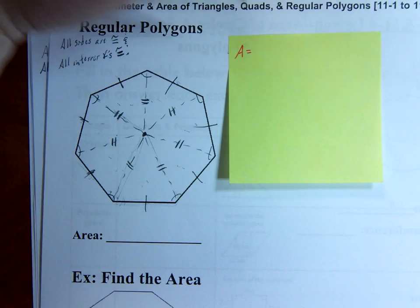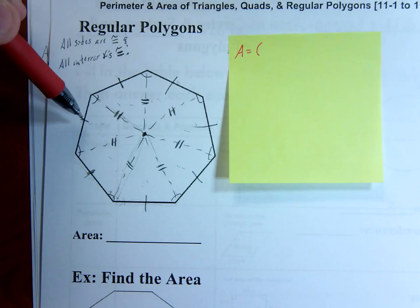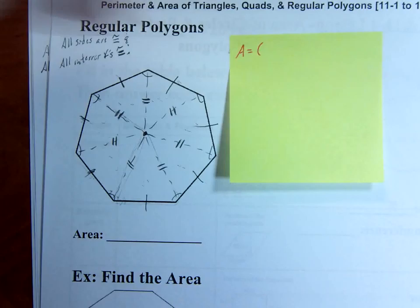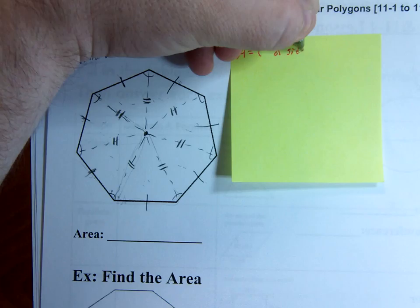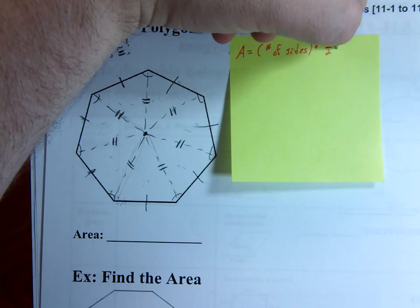Area is equal to, and the number of triangles, that's the same as the number of sides, yes? Usually we represent the number of sides of polygons with the letter N, is that correct? So I'll just say number of sides, and I'll write that as N later on, but just the first time we need to know what that is. So the number of sides times the area of one of those triangles, which is one half base times height.